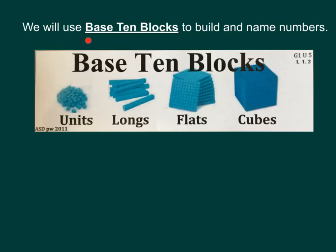Today we will use base 10 blocks to build and name numbers. We've seen base 10 blocks before. Units are small individual cubes. They're worth 1. Longs are worth 10 because 10 small units can make 1 long. Flats are something you've probably seen before but we haven't used yet. Flats are worth 100. So 100 units make 1 flat.